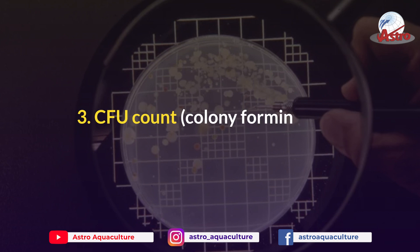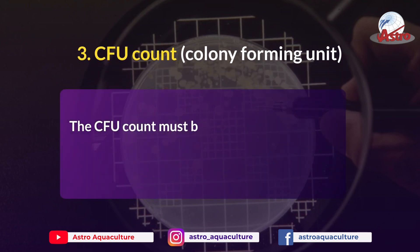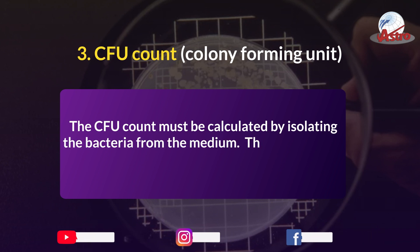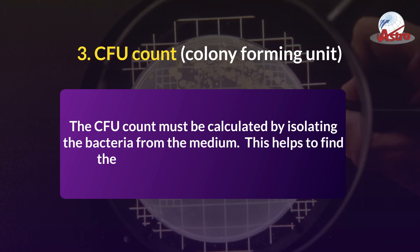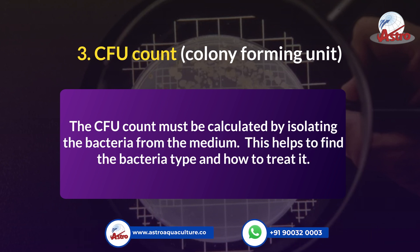Measure 3: CFU count — Colony Forming Unit. The CFU count must be calculated by isolating the bacteria from the medium. This helps to find the bacteria type and how to treat it.